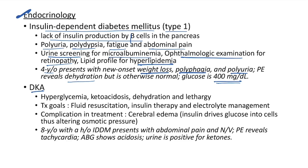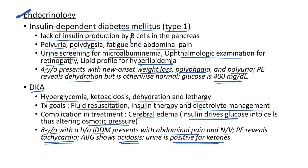Diabetic ketoacidosis: hyperglycemia, ketoacidosis, dehydration, and lethargy. Treatment goals: fluid resuscitation, insulin therapy, and electrolyte management. A major complication is cerebral edema — insulin drives glucose into cells altering osmotic pressure. Case: 8-year-old with insulin-dependent diabetes presents with abdominal pain, nausea and vomiting; tachycardia; ABG shows acidosis; urine positive for ketones.